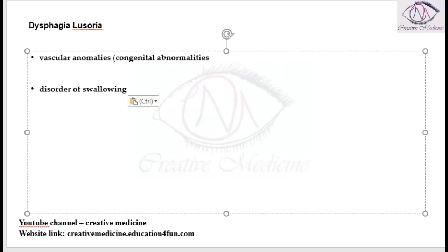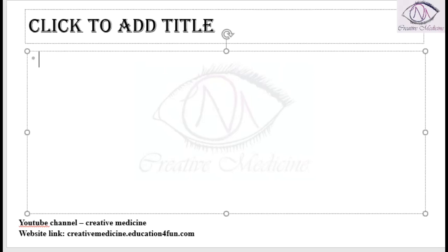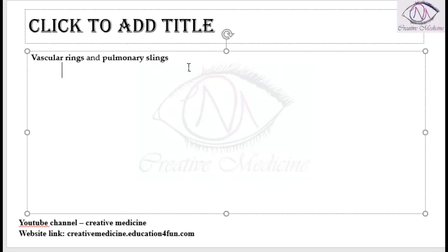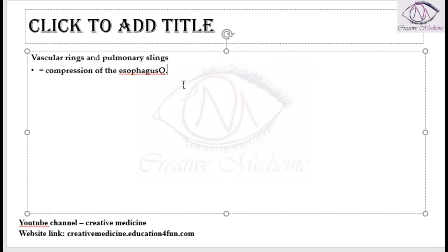The vascular anomalies in dysphagia lusoria are of many types. The important ones include vascular rings and pulmonary slings. These are developmental anomalies of the great vessels, and whenever these occur they cause compression of the esophagus, resulting in dysphagia lusoria.